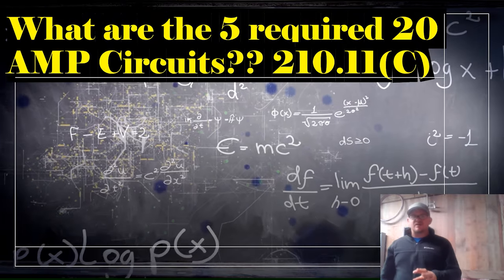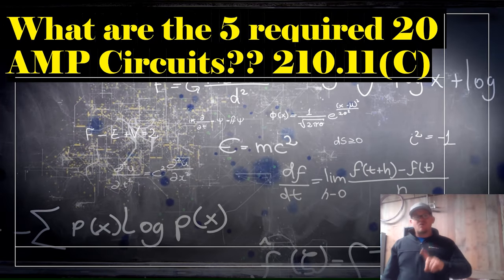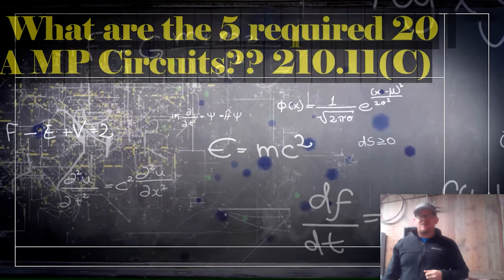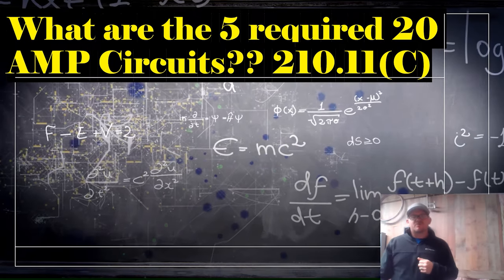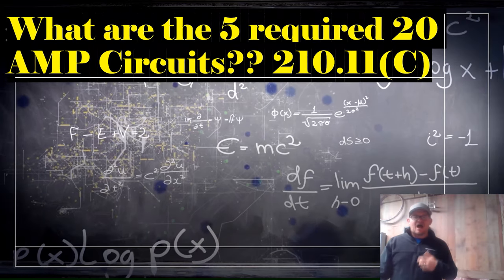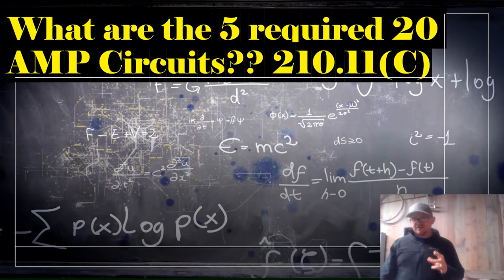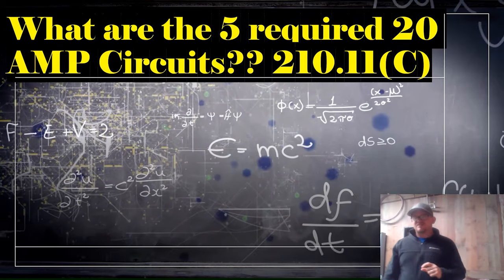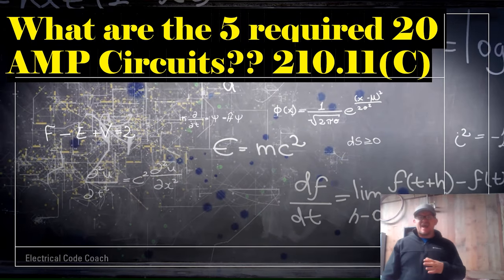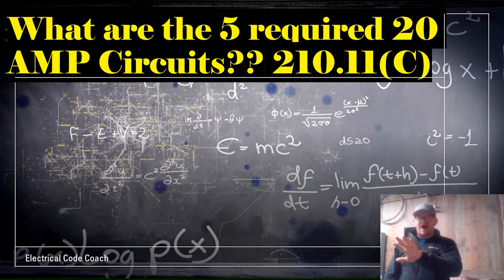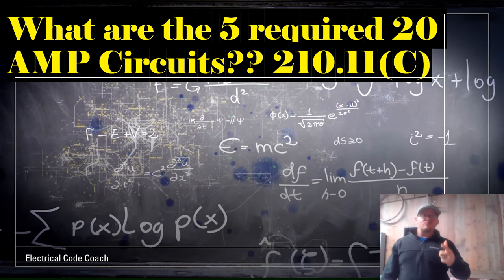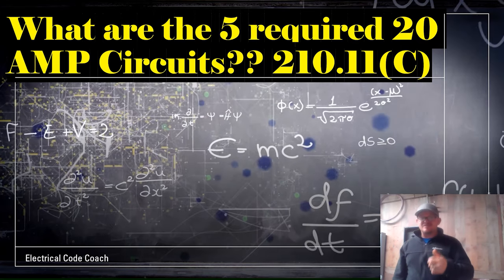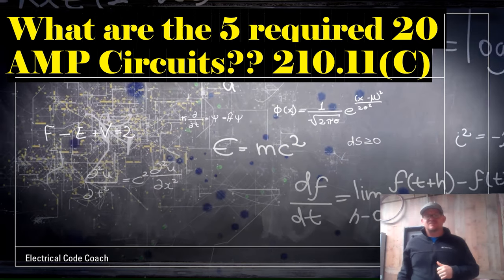Before we get started, if you don't have one of these locations in the home, then you're not required to have that branch circuit. Also, a tip if you're studying for your electrical license: this question is likely to be on your test, and the answer they're looking for is five. Always remember — how many required 20-amp branch circuits are there? Five. That's a freebie that'll get you one step closer to getting your license.